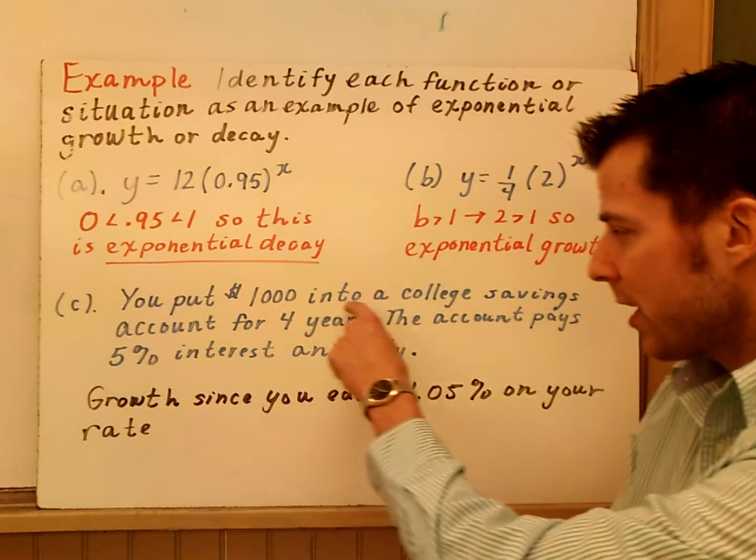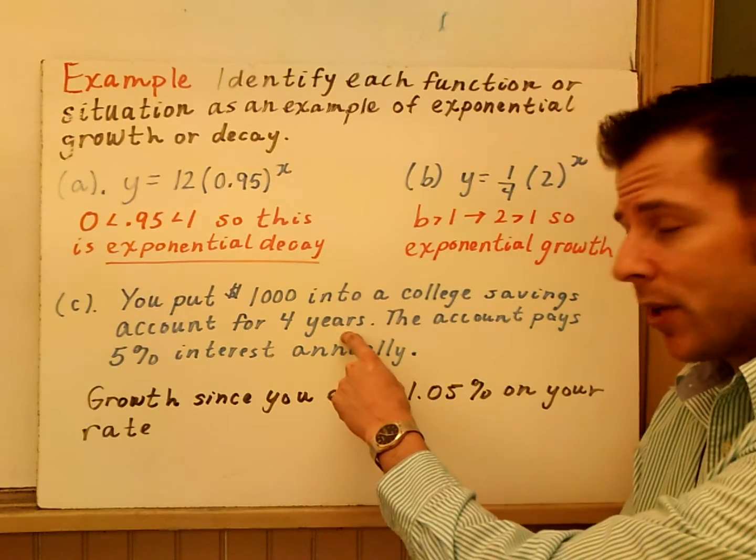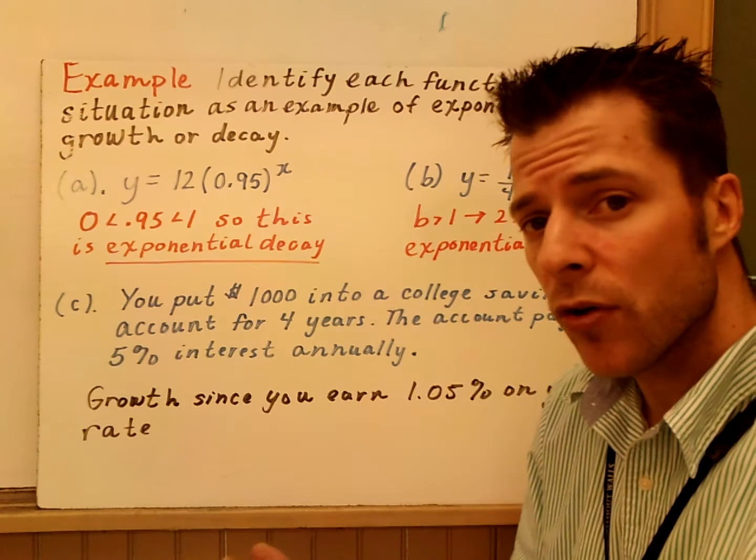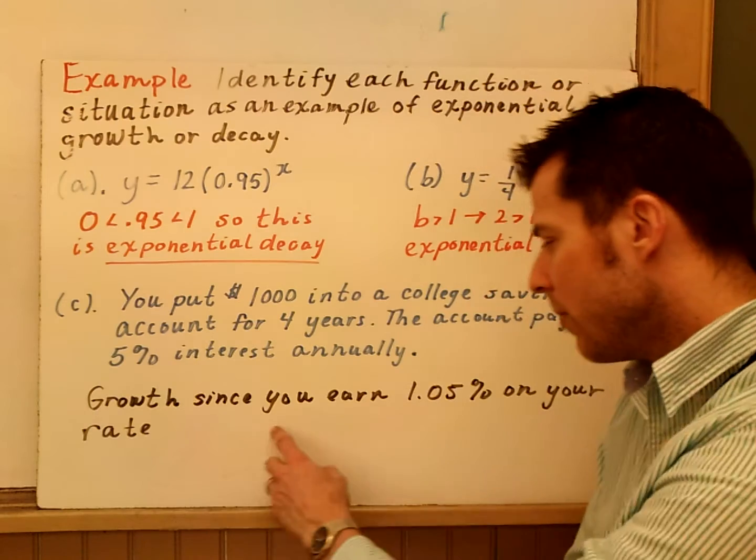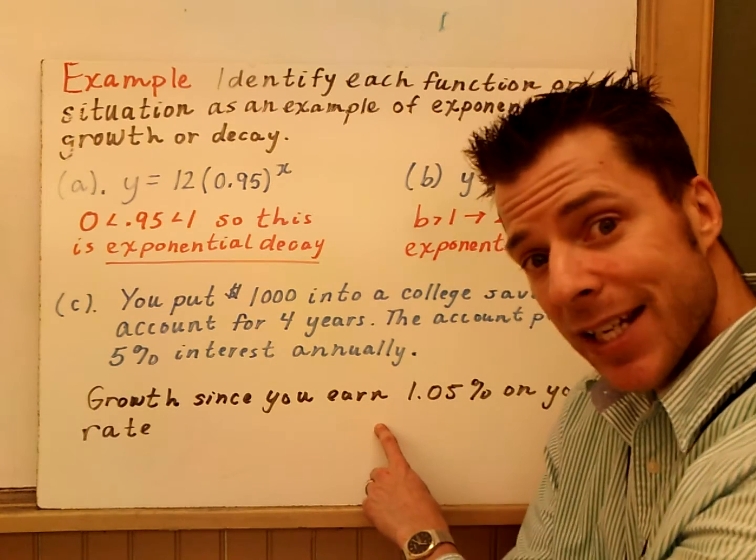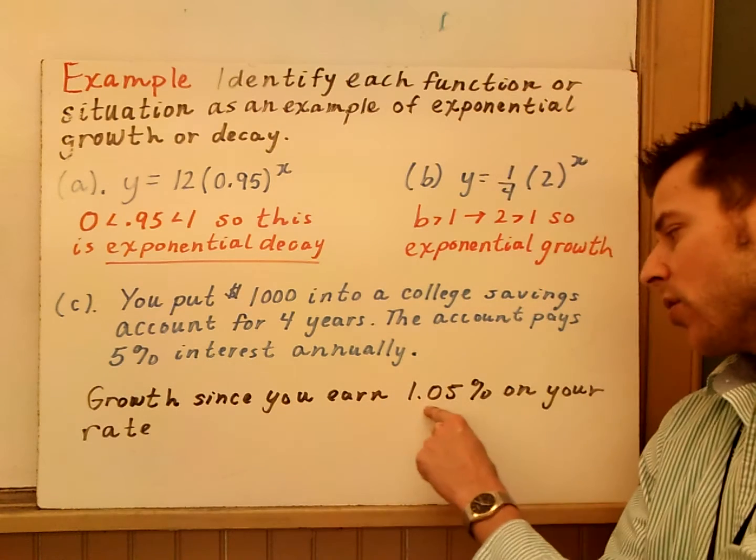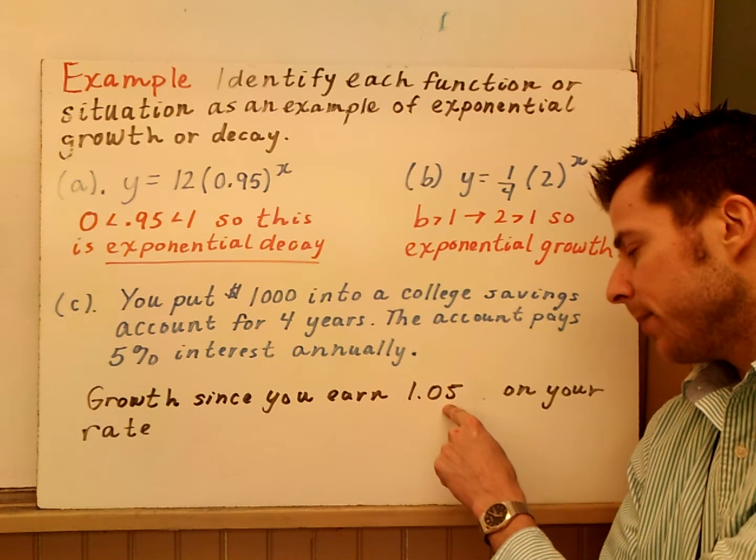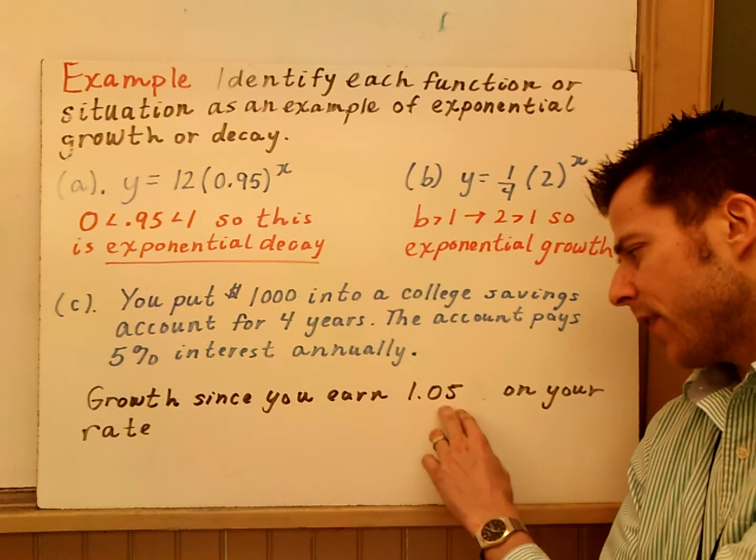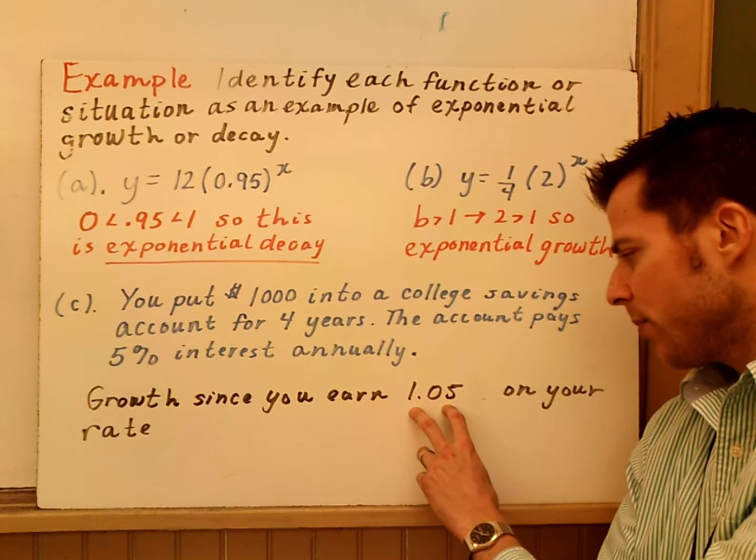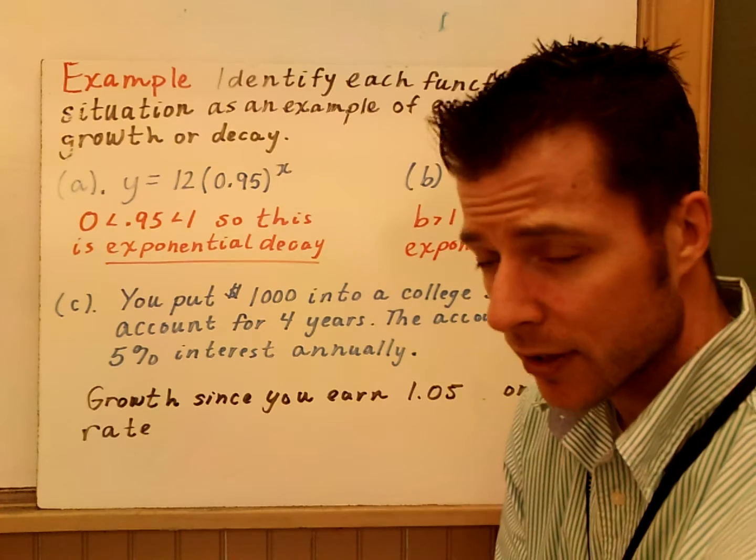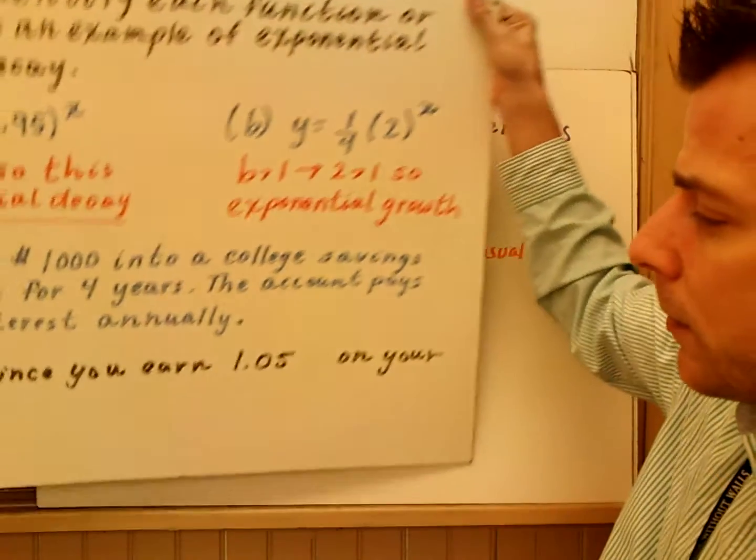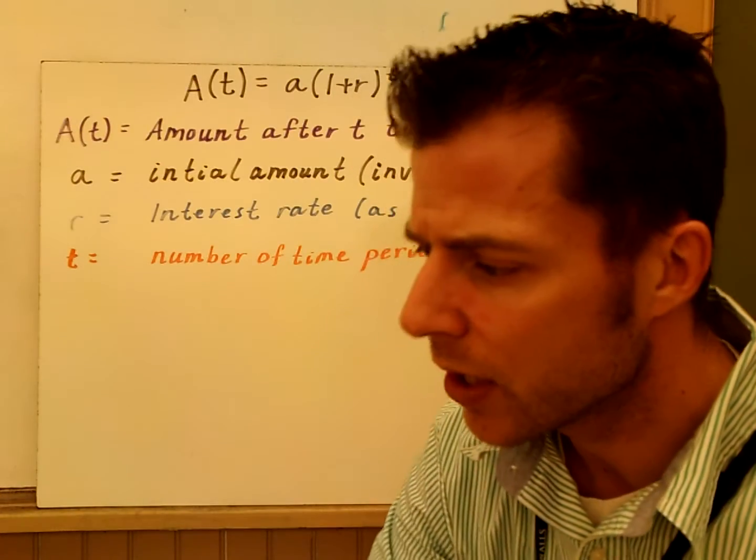You keep maybe 95% of the value. But when you're investing money, as soon as you're saying, yeah, you put money into account, unless you want to lose money, this is going to be growth. So, I can just tell you that if we put $1,000 into a college savings account for four years, it's going to be growth. The account pays you 5% interest annually. So, this is growth, but it's growth because your b value is greater than 1. Why is it greater than 1? Because you're making 100% of your money. In addition, you're making an additional 5%. So, you're earning 1.05 on your return. Because you get your 100% plus your 5%. So, our growth factor here is 1.05, which is barely greater than 1. But it's still greater than 1, so it's still growth.